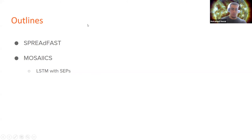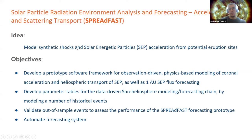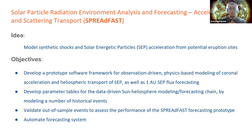The two main projects we are working on are the SpreadFAST and MOSAICS projects. Under MOSAICS, we are developing a deep learning-based model for forecasting the flux of SEPs at 1 AU. For SpreadFAST, the main idea is to model synthetic shock waves and the associated SEP acceleration and transport through the heliosphere from active regions. The main objectives are to develop a working prototype framework for data-driven and physics-based modeling for SEP acceleration and transport, forecasting SEP flux at Earth, and preparing parameter tables for shock parameters by modeling historical events.